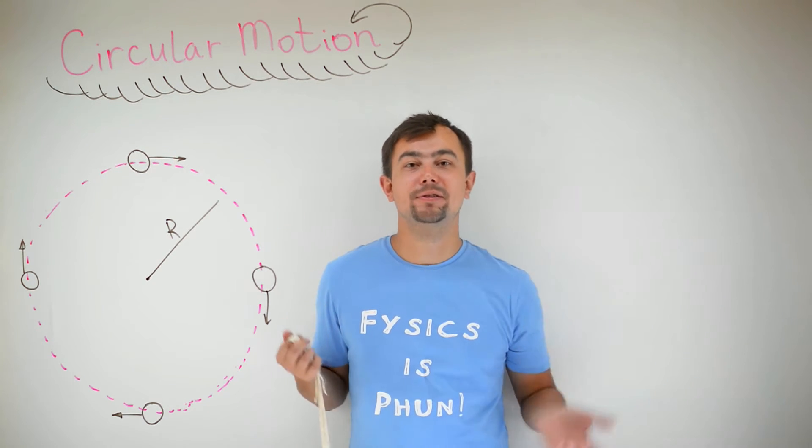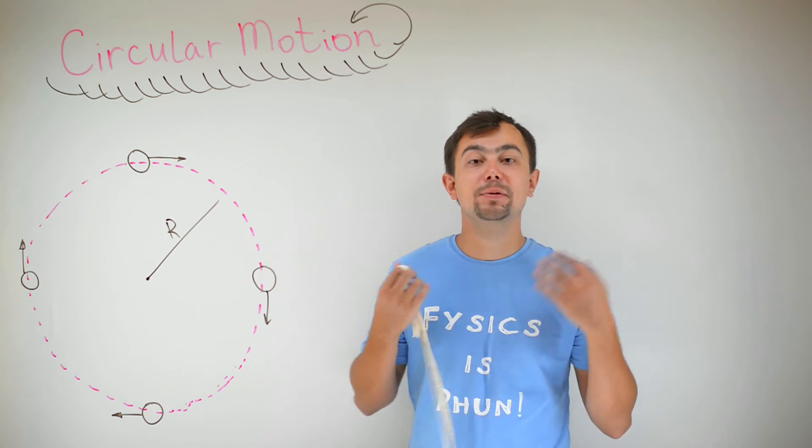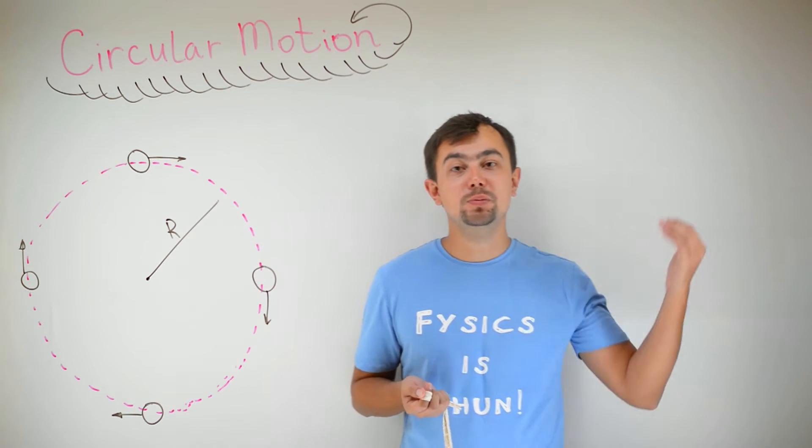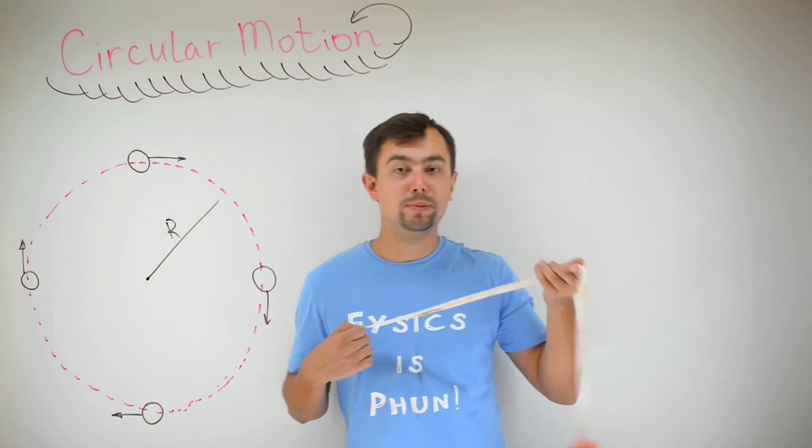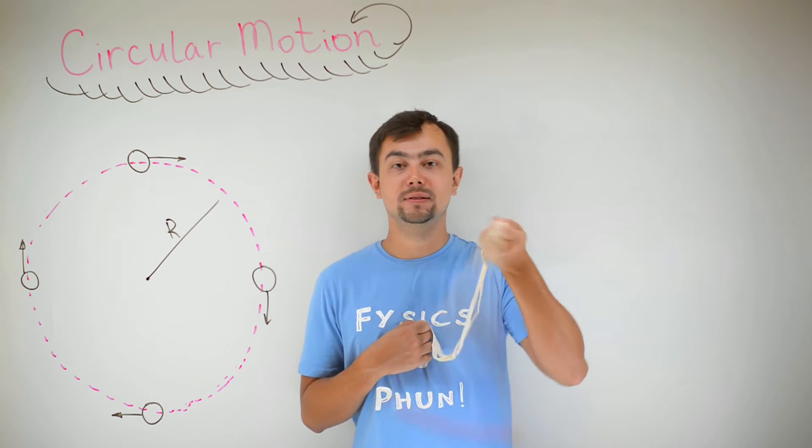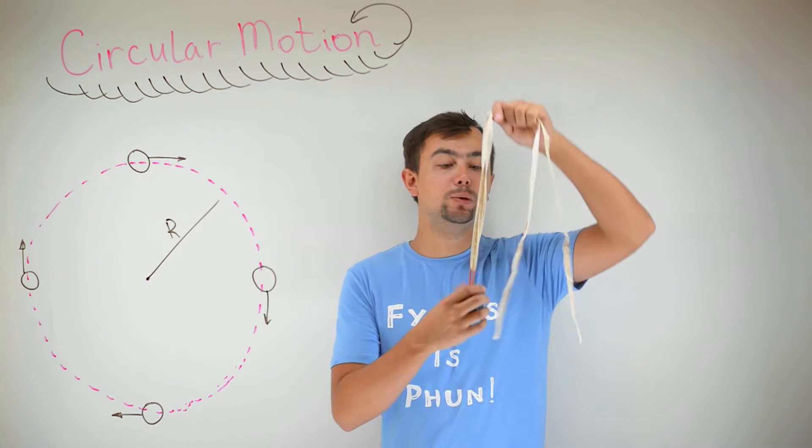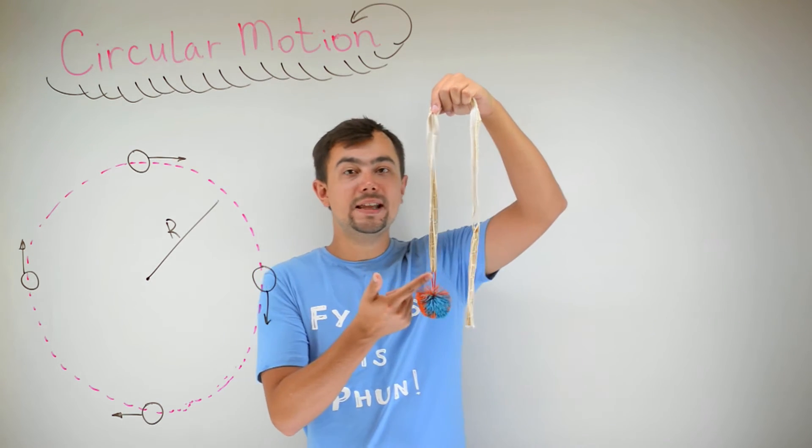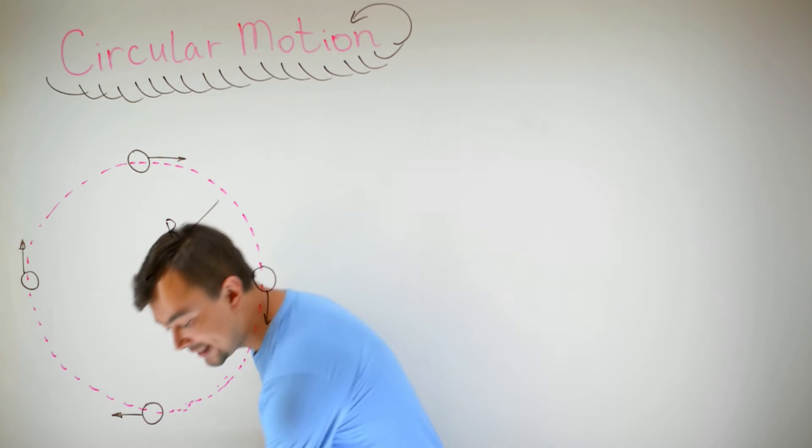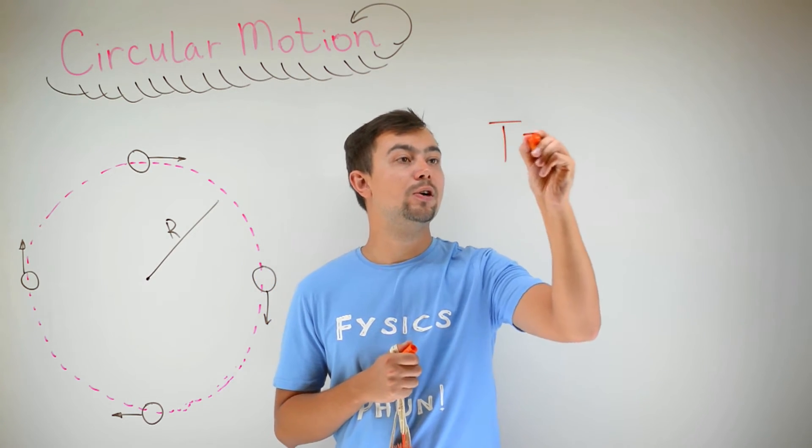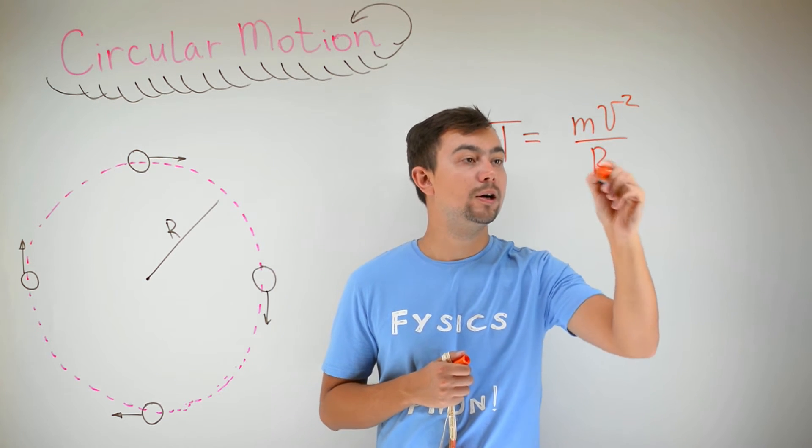Why do we need a centripetal force? Well, according to Newton's first law, if there was no force, the body would move in a straight line. Let's say this mass on a rope. If I start spinning, I provide a centripetal force. Where does it come from? What is the origin? Well, the centripetal force is the tension in the rope. So I can say that the tension in the rope is equal to mv squared divided by r.